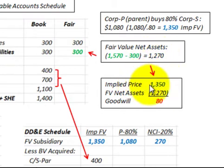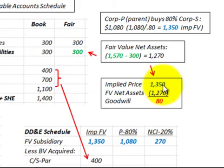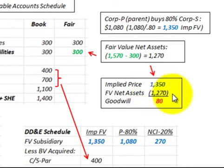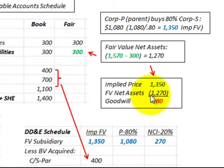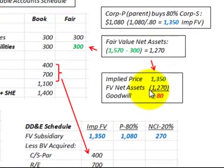Going back to our implied price: the parent paid $1,080,000 for 80%, so the implied price was $1,350,000. We subtract out the fair value of the net assets and that gives us our goodwill. These calculations are needed for setting up our adjustments account.